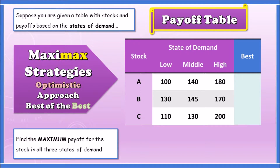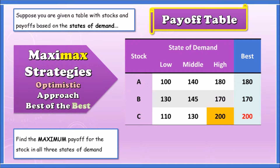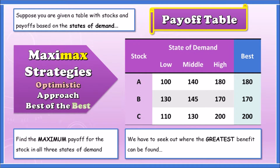Looking at the first row, Stock A has values 100, 140, and 180 — the highest is 180. For Stock B we've got 130, 145, and 170 — the highest is 170. For Stock C we've got 110, 130, and 200 — the highest is 200. These go under the 'best' column for each stock.